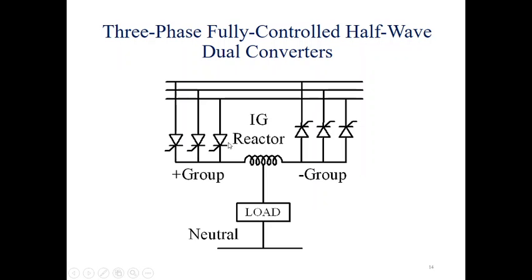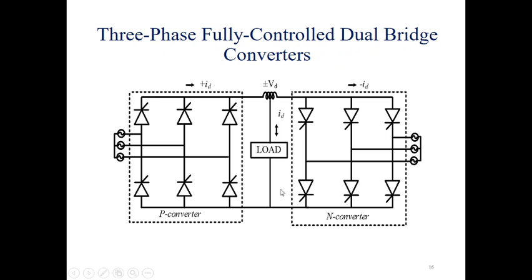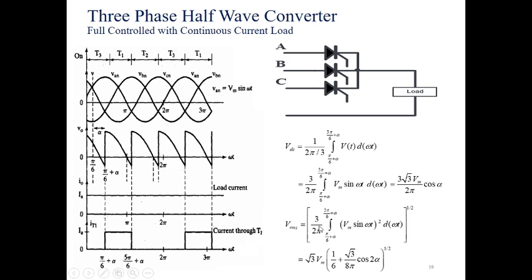This is a three-phase fully controlled half-wave dual converter — this topology is used in cycloconverters. This is another topology: the three-phase dual bridge converter. This converter can work in two quadrants, this topology in one quadrant, another in two quadrants, and the dual converter topology can work in all four quadrants. Now, analysis of the three-phase half-wave converter.